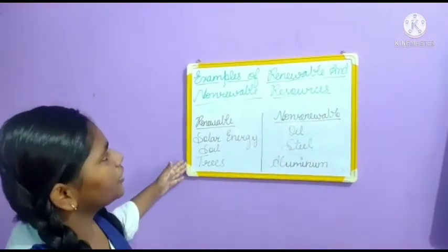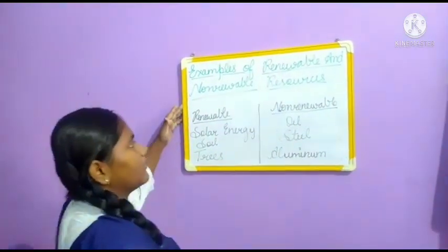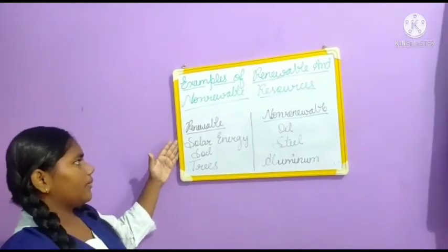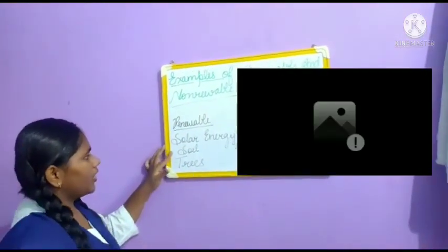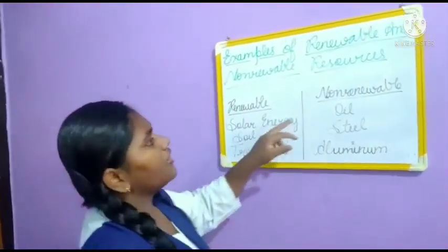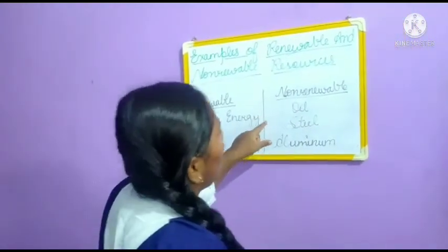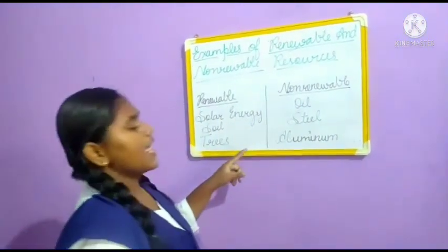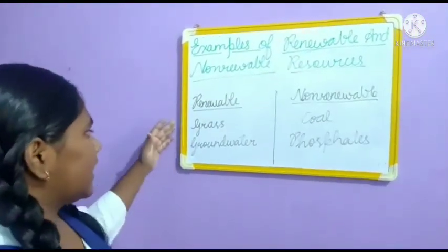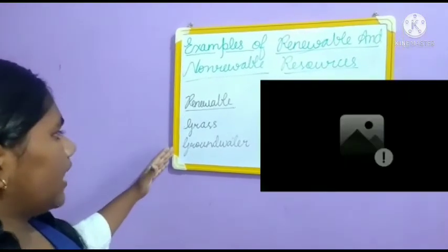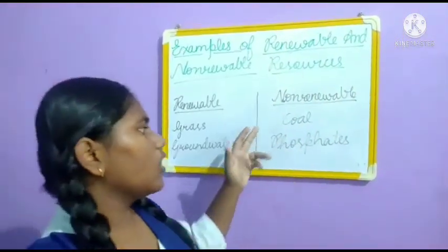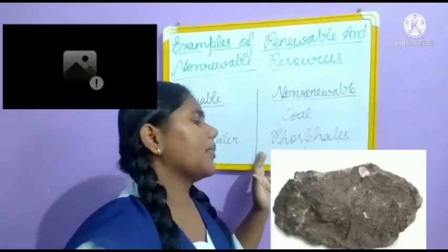Examples of renewable resources: solar energy, soil, trees. Examples of non-renewable resources: oil, steel, aluminum, glass, groundwater, and coal. Thank you sir.